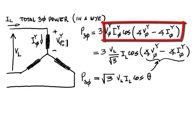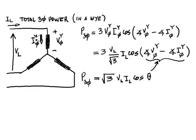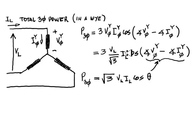The power in one branch is the RMS phase voltage V_φY times the RMS phase current I_φY, multiplied by the power factor of that load — which is the cosine of the difference between the phase of the voltage in that branch minus the phase of the current in that same branch. Then we replaced V_φY using the line-to-neutral relationship, noting that the current in that branch is the same as the line current. The total three-phase power came to be root 3 times RMS V_line times RMS I_line times the power factor — cosine of that angle theta.